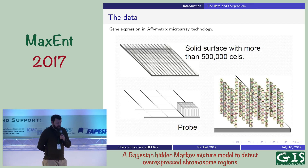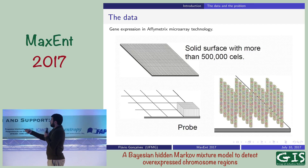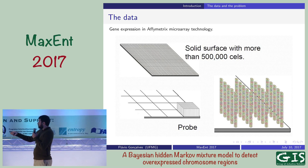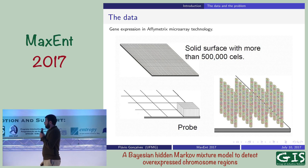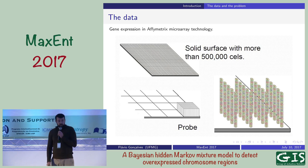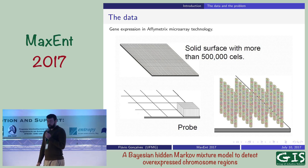What is a microarray? Basically, it is a solid surface with 712 by 712 cells, giving a bit more than 500,000 cells, which I'll call probes. In one microarray, which has size one and a half by one and a half centimeters, I have a little over 500,000 of these probes.